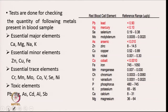Tests are done for checking the quantity of several metals present in blood samples. Some metals are essential, such as calcium, magnesium, sodium and potassium. There are minor elements also essential, for example zinc, copper and iron. There are essential trace elements like chromium, manganese, molybdenum, cobalt, vanadium, selenium and nickel. There are also toxic elements such as lead, mercury, arsenic, cadmium and antimony.